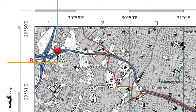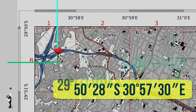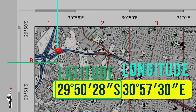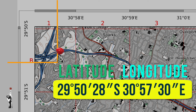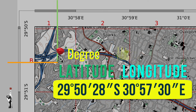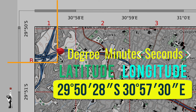So the school near Bonella in B1 is located at 29 degrees 50 minutes 28 seconds south, and 30 degrees 57 minutes 30 seconds east. Always present coordinates in the correct order: latitude first, then longitude. Within each, present in the order of degree, minute, second, and direction — and the same for longitude: degree, minute, second, and direction.